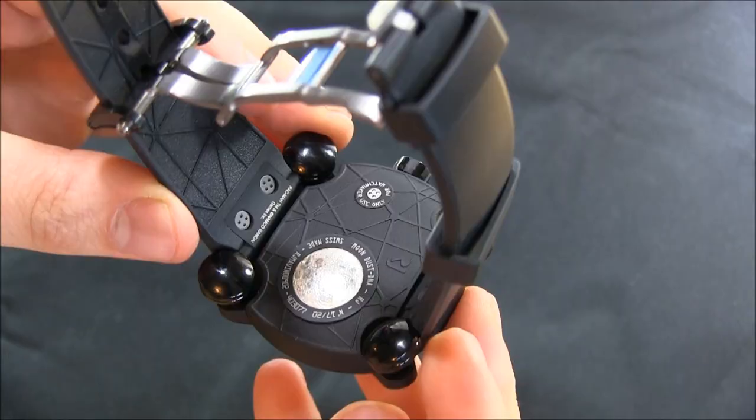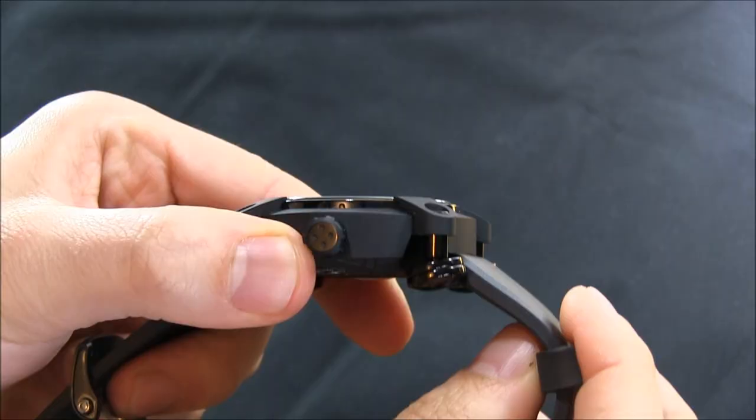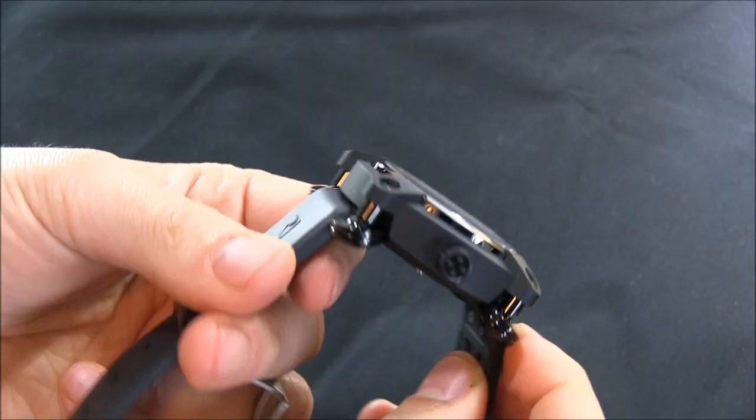Because this is part of the Moon Invader collection, the case is supposed to look like a moon landing vehicle. You can see here that the straps, when it moves, so does this little foot. And it's supposed to make it a little bit more comfortable there on the wrist.